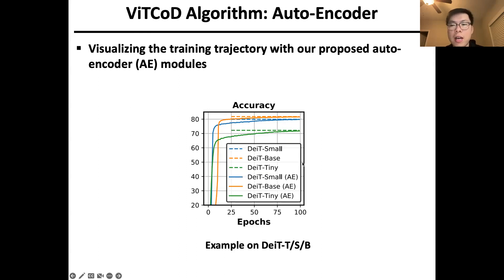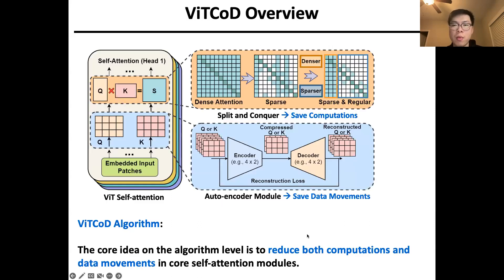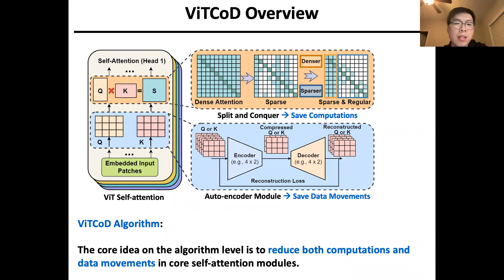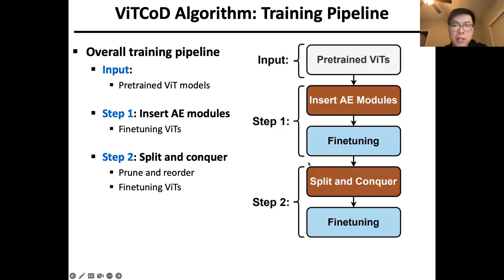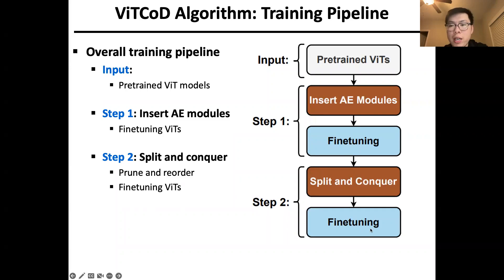So far we have introduced two main ideas in the VIT-CoD algorithm to trim down both computation and data movements. To unify them together, we show the overall algorithm training pipeline. The input is the pre-trained VIT model. Step one is to insert the autoencoder module and fine-tune the model for 100 epochs. Step two is to perform pruning and re-ordering to split the workload into two parts, and then fine-tune for another 100 epochs.